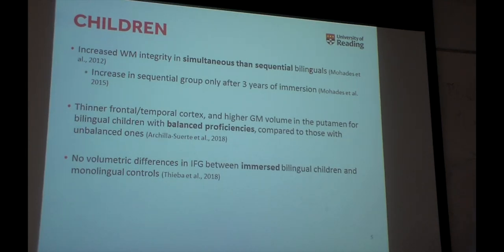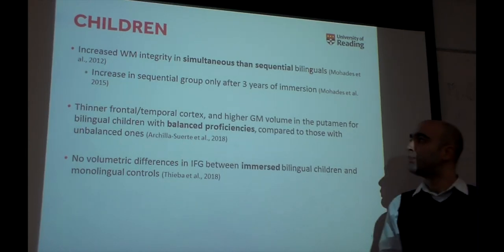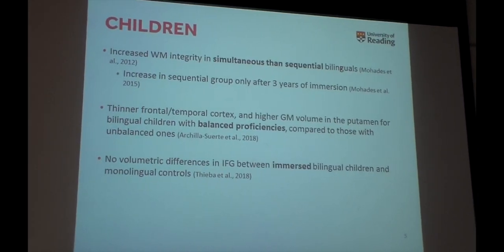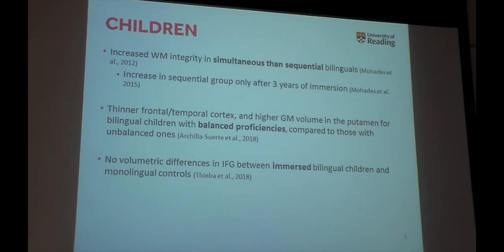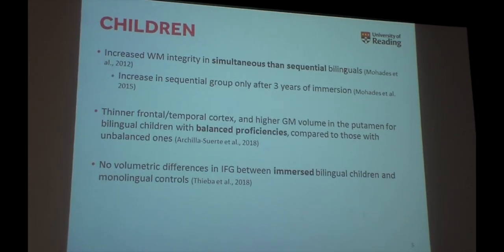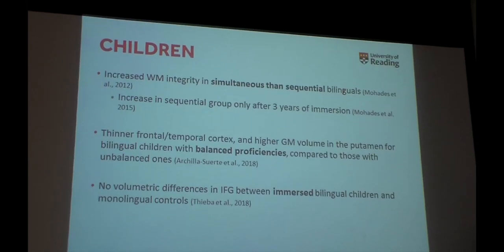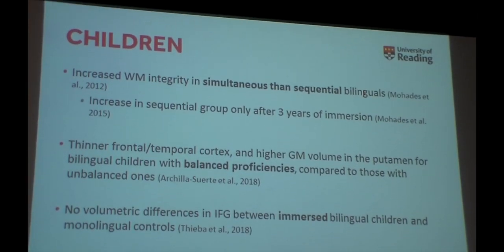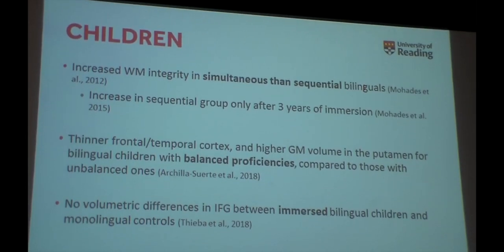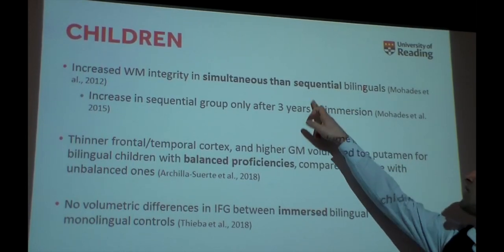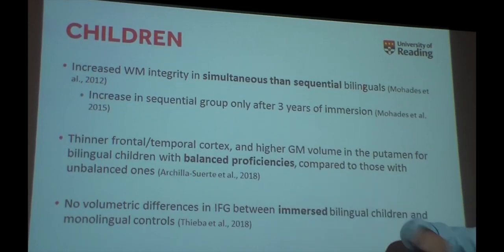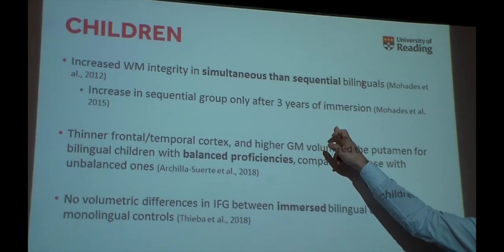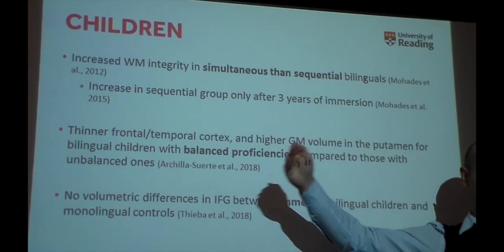When it comes to children, the literature is much, much smaller. It has been reported that simultaneous versus sequential bilingual children have increased white matter integrity. And the same measure changed in sequential bilingual children only after they were tested again three years later. So that's the only longitudinal study that looked at how brain structure develops in bilingual children.